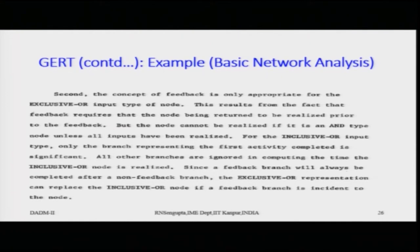Feedback requires that the node being returned to is realized prior to the feedback, but an AND type node cannot be realized unless all inputs have been realized. In an exclusive OR, any one input realizes the node; in an AND network, all inputs must be realized for the output to be true — analogous to series (all elements active) versus parallel (any one active) circuits.